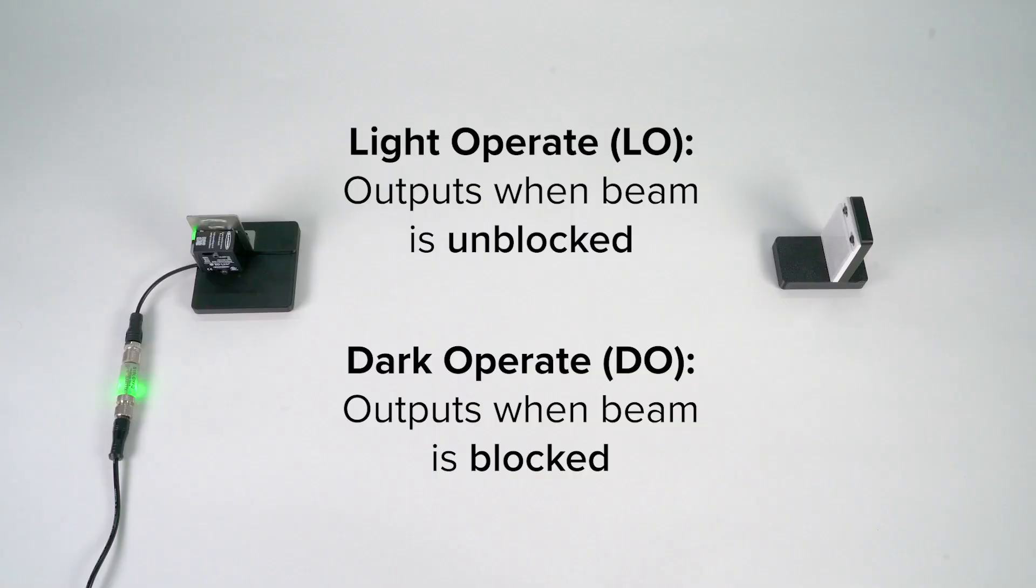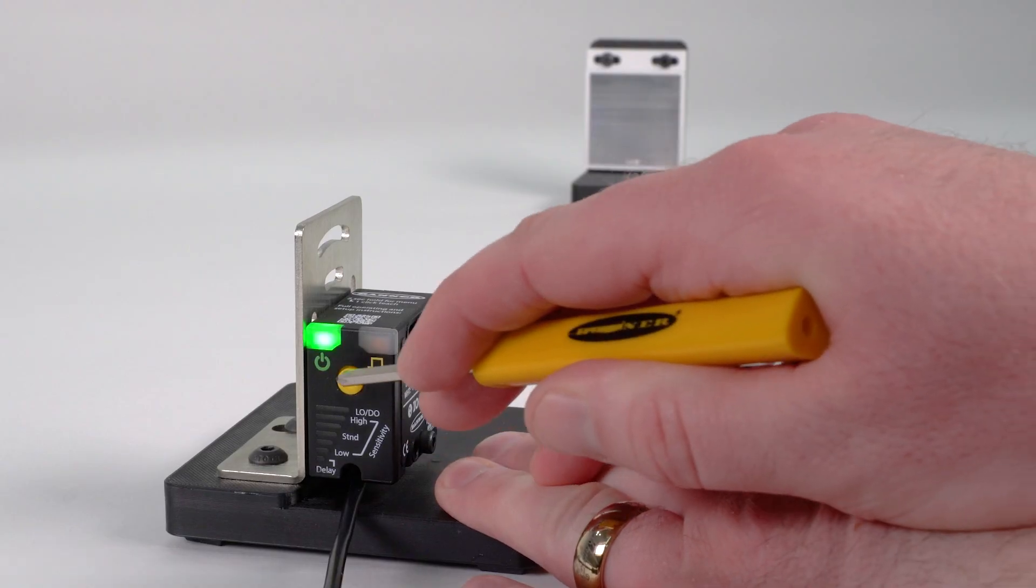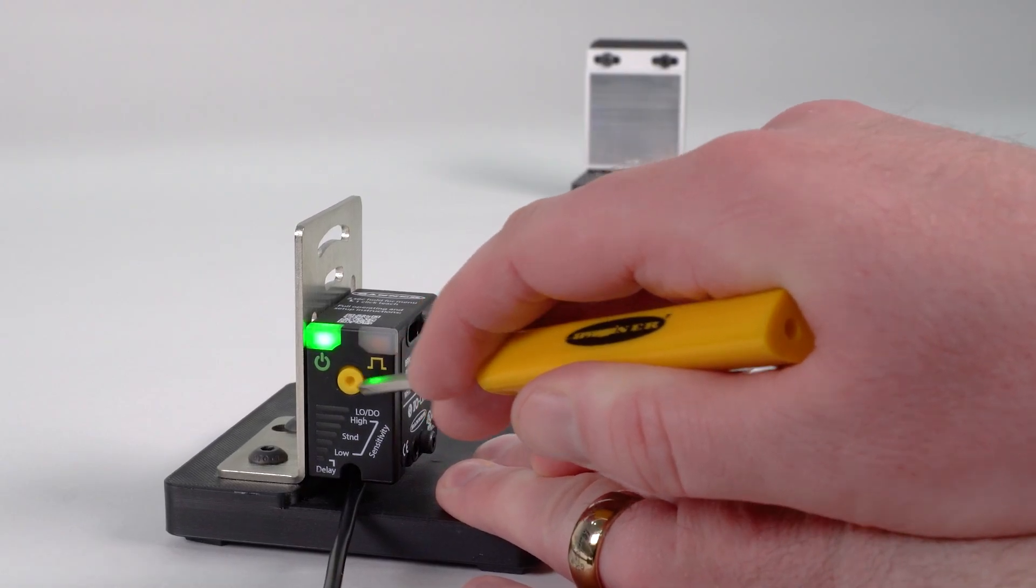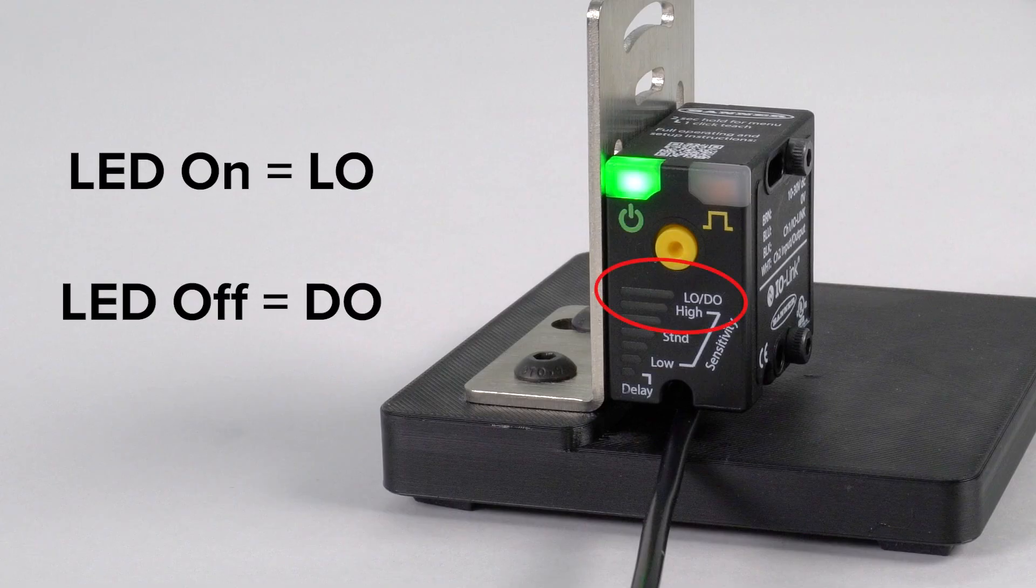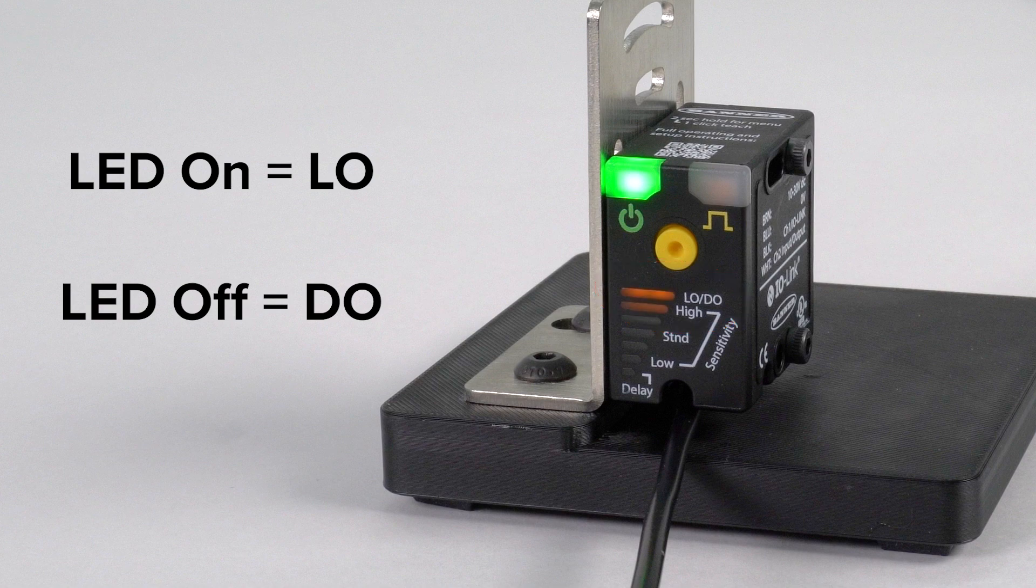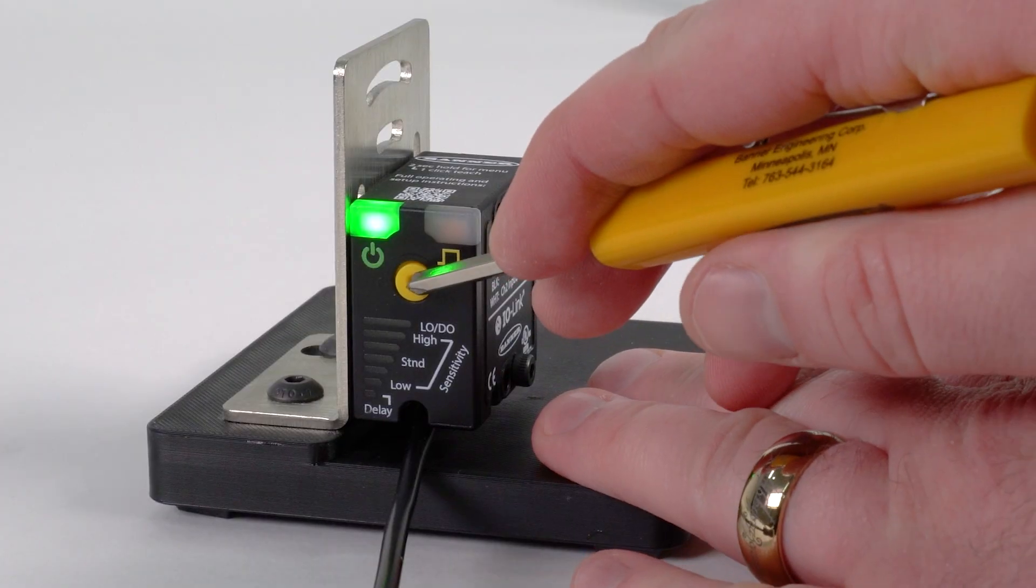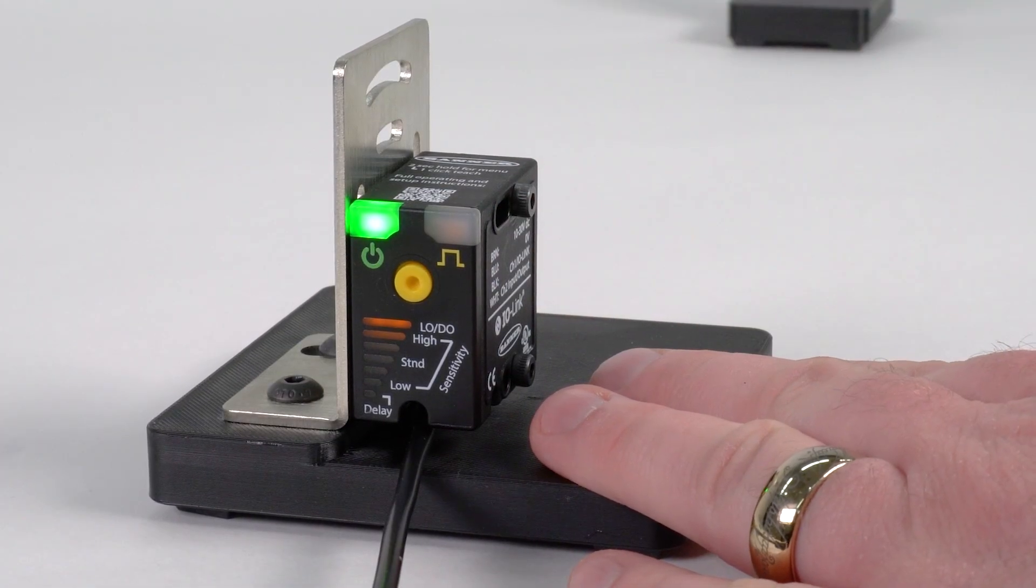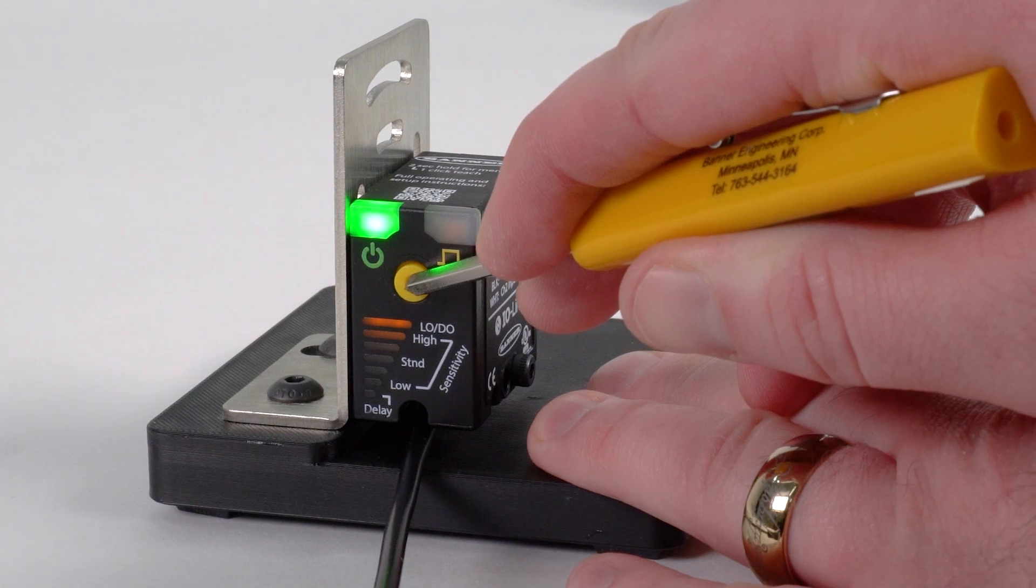If you need to flip which condition triggers the sensor output, you can do so by toggling between light operate and dark operate. To do this, put the sensor into configuration mode and then press the button four times. The top bar of the bar graph will now show the current output setting with on referring to light operate and off referring to dark operate. Press the teach button to toggle between these options and then press and hold for two seconds to confirm your selection.